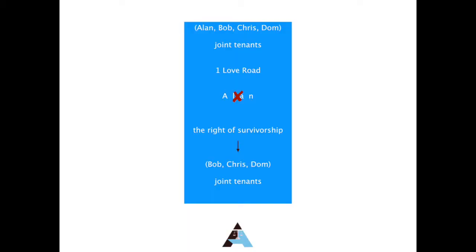The question is: what would happen to One Love Road if one of the tenants died? The right of survivorship rule states that if any of the joint tenants dies, his or her interest will automatically pass to the other joint tenants. The effect of this is that neither of the parties owns a separate share in One Love Road. By way of example, if Alan passes away, his interest devolves to Bob, Chris and Dom, who carry on holding One Love Road as joint tenants.